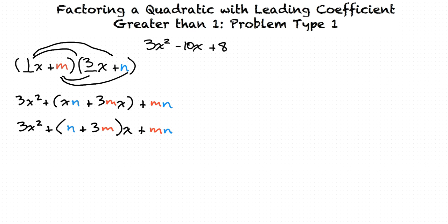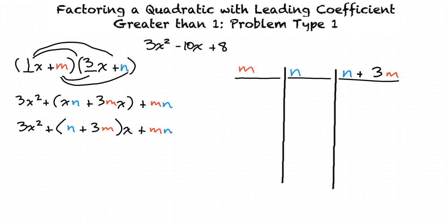If we list integers m and n such that m times n equals 8, we can find which pair, when substituted into n plus 3m, will equal negative 10. This pair will give us our true factors of the quadratic polynomial. Starting with m equals 1 and n equals 8: substituting into n plus 3m gives 8 plus 3 times 1, which equals 11 — that does not work. Trying m equals negative 1 and n equals negative 8 gives negative 11 — also does not work.